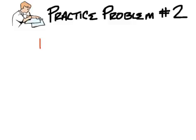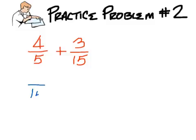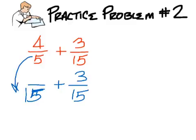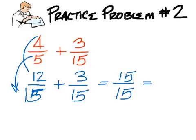Practice number two. Four over five plus three over fifteen. For the practice problem, your lowest number that five and fifteen both go into is going to be fifteen. This one doesn't have to change because it's already a fifteen. But over here you have to multiply by three. So four times three is twelve. Fifteen over fifteen is not the final answer. One is the final answer.